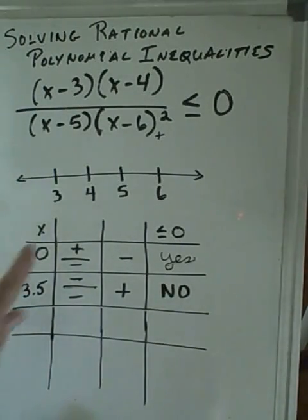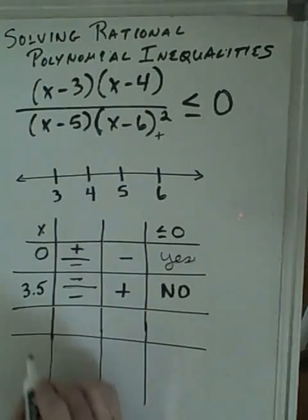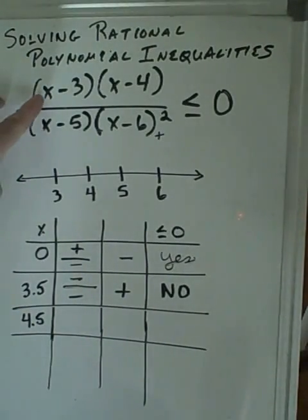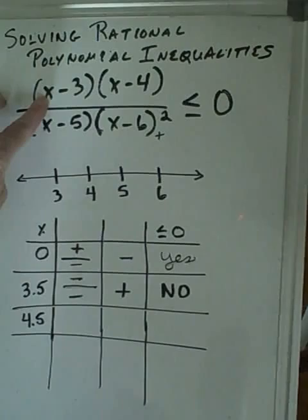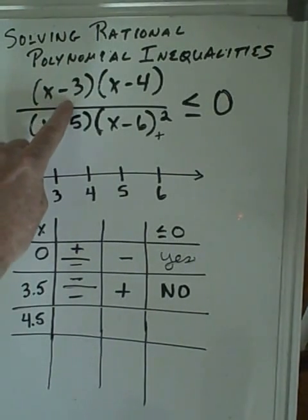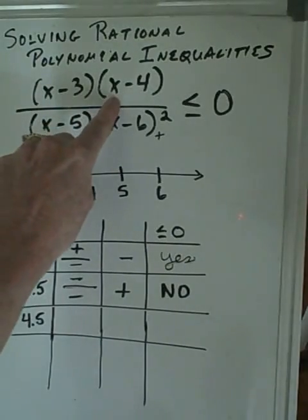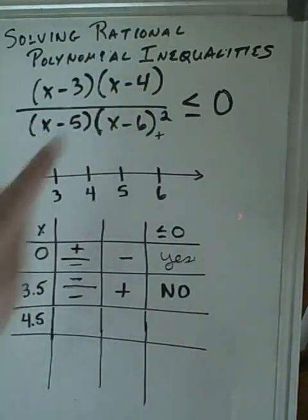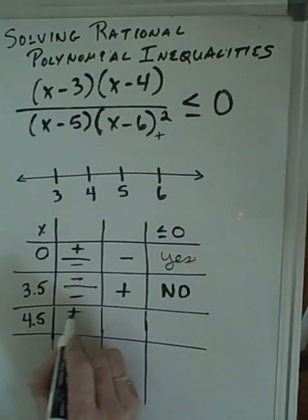We test another point between 4 and 5, so let's try 4.5. We plug 4.5 here, 4.5 minus 3 is 1.5, but it doesn't matter, it's positive. And we put 4.5 in here, it's also positive. So a positive times a positive is a positive.